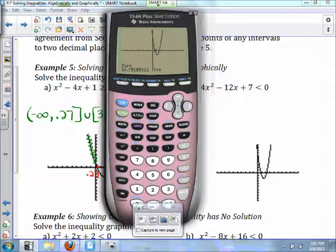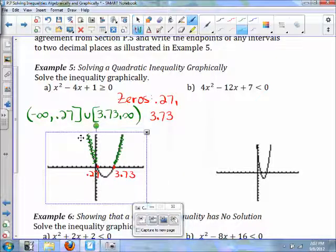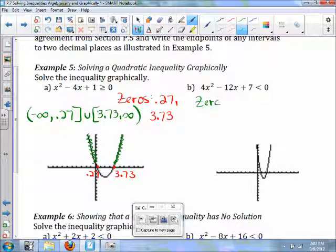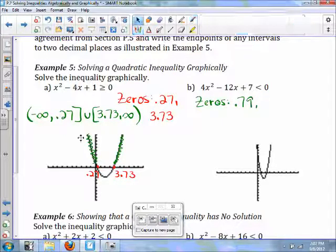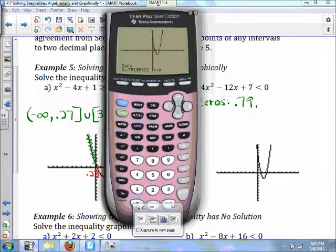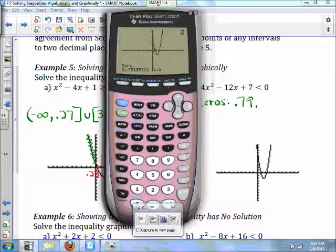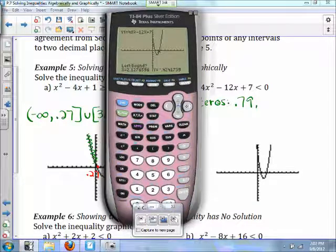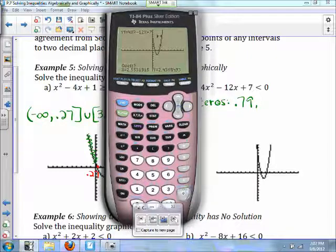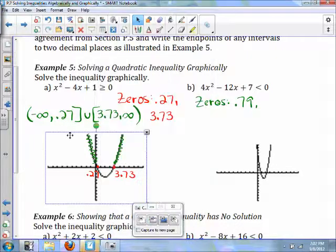So my first zero is at 0.79. My second zero will be at 2.21.